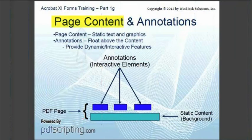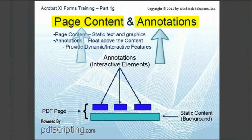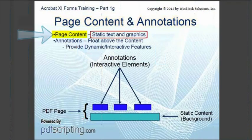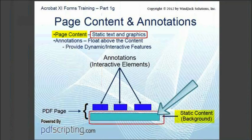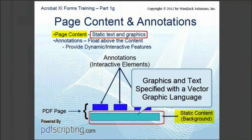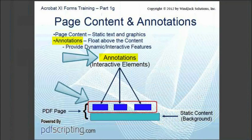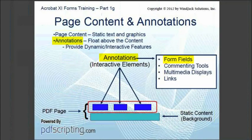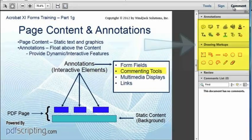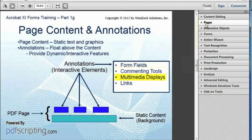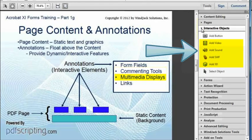On a page, there are two types of elements: the static page content, and a list of annotations. The static page content is all the normal text, graphics, and images on the page — it is what you normally think of as the main document content. This slide is a PDF page, and everything on it is part of the static page content; there are no annotations currently on this page. Inside the internal structure of the PDF, this content is specified with a vector graphic language that is unique to PDF. Annotations are a special kind of element that the user can interact with. For example, form field widgets are a type of annotation. All of the commenting and markup tools are annotations, as are all of the multimedia tools shown on the Tools Interactive Objects panel.